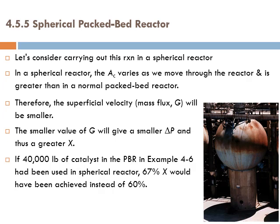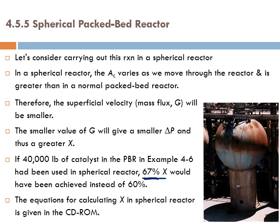If the 40,000 pounds of catalyst from the previous packed bed example were used in a spherical reactor, you would get more conversion — not 60% but 67% — because you experience less pressure drop.